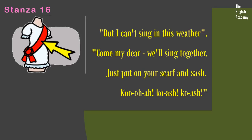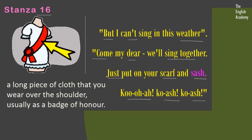Stanza 16: 'But I can't sing in this weather.' 'Come my dear, we'll sing together. Just put on your scarf and sash. Ku-o-a, ku-ash, ku-ash.' Sash here means a long piece of cloth that you wear over the shoulder, usually as a badge of honor. Here you can see in the image this person is wearing a red colored ribbon over the shoulder — this is a sash. A similar sash was given to the nightingale by the frog because she was a student taking training from him.